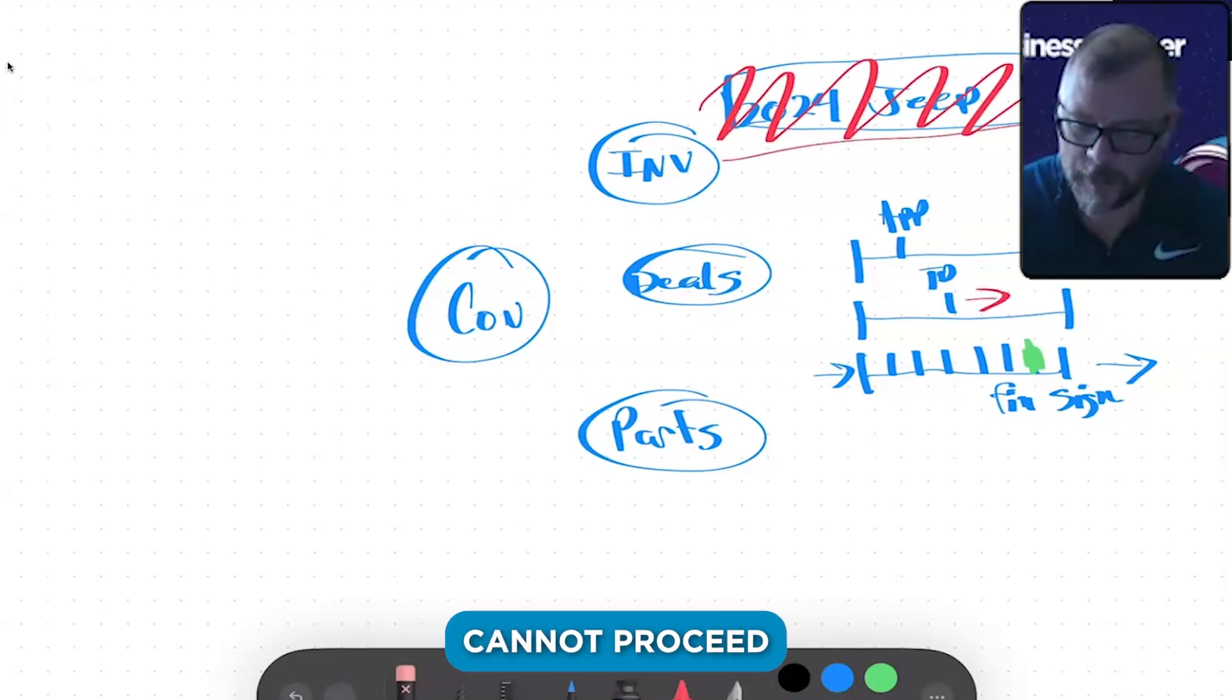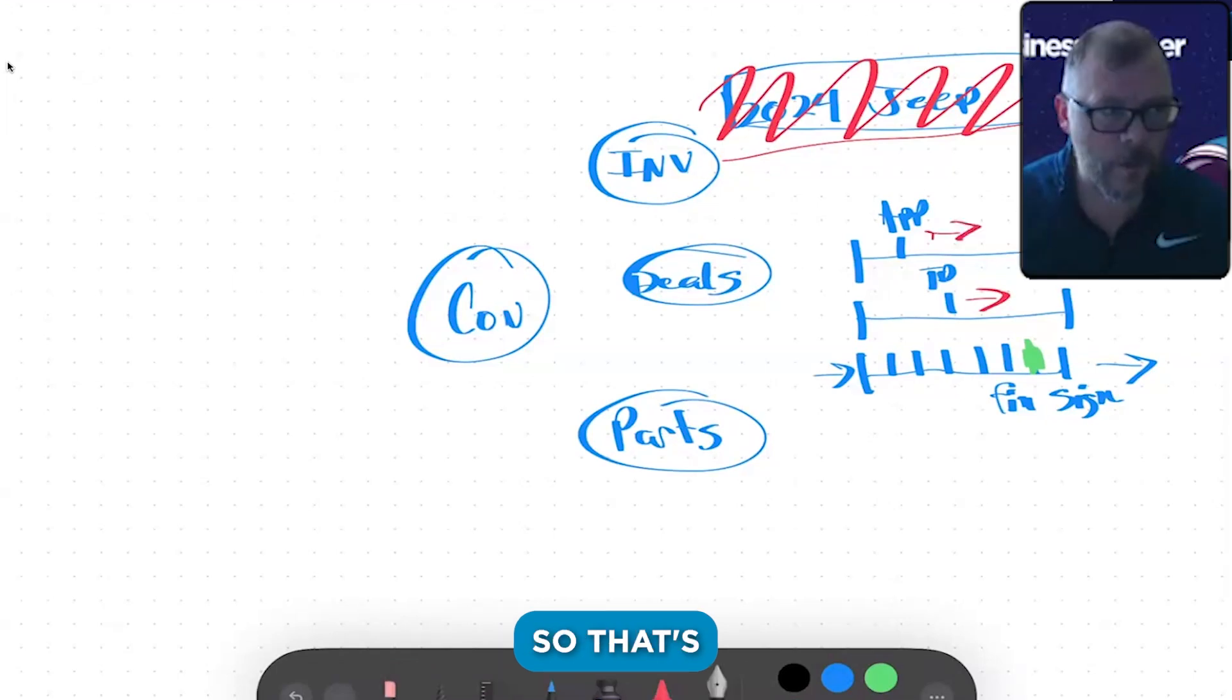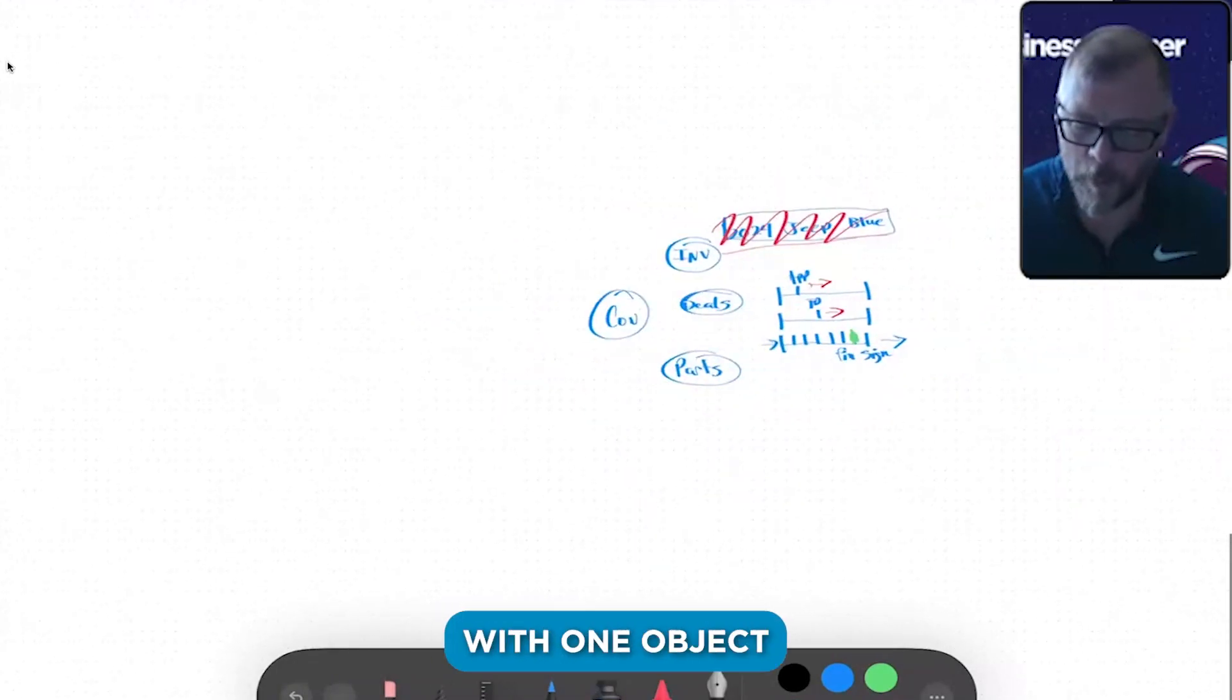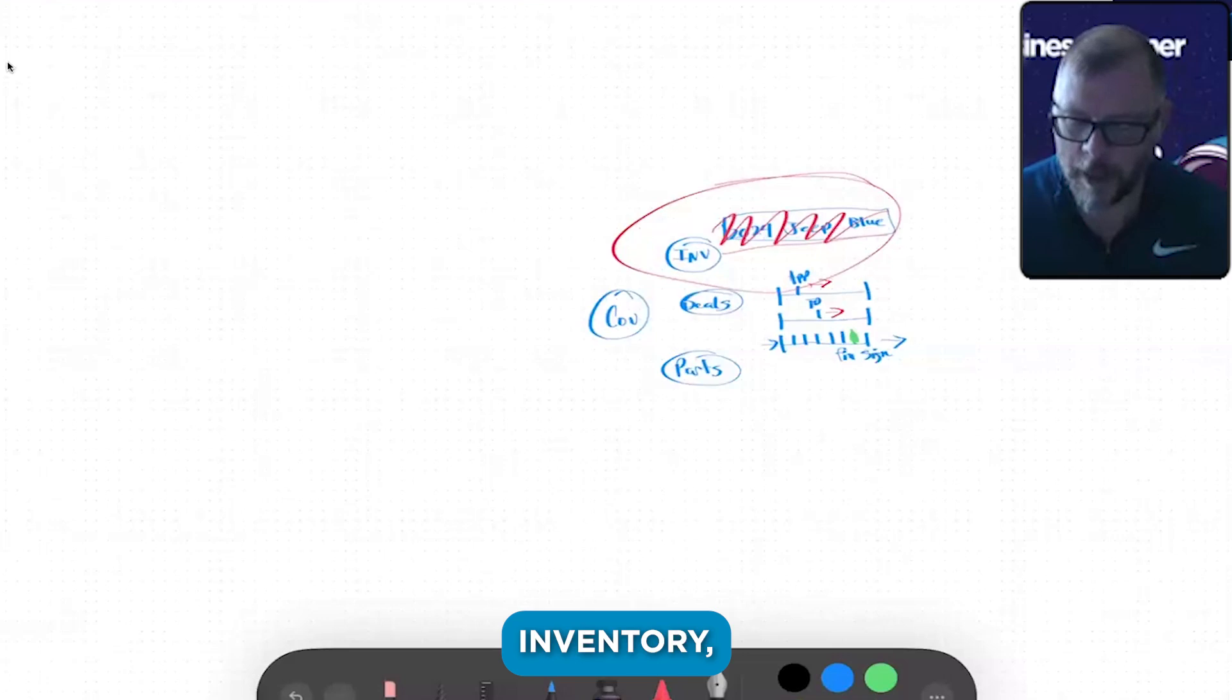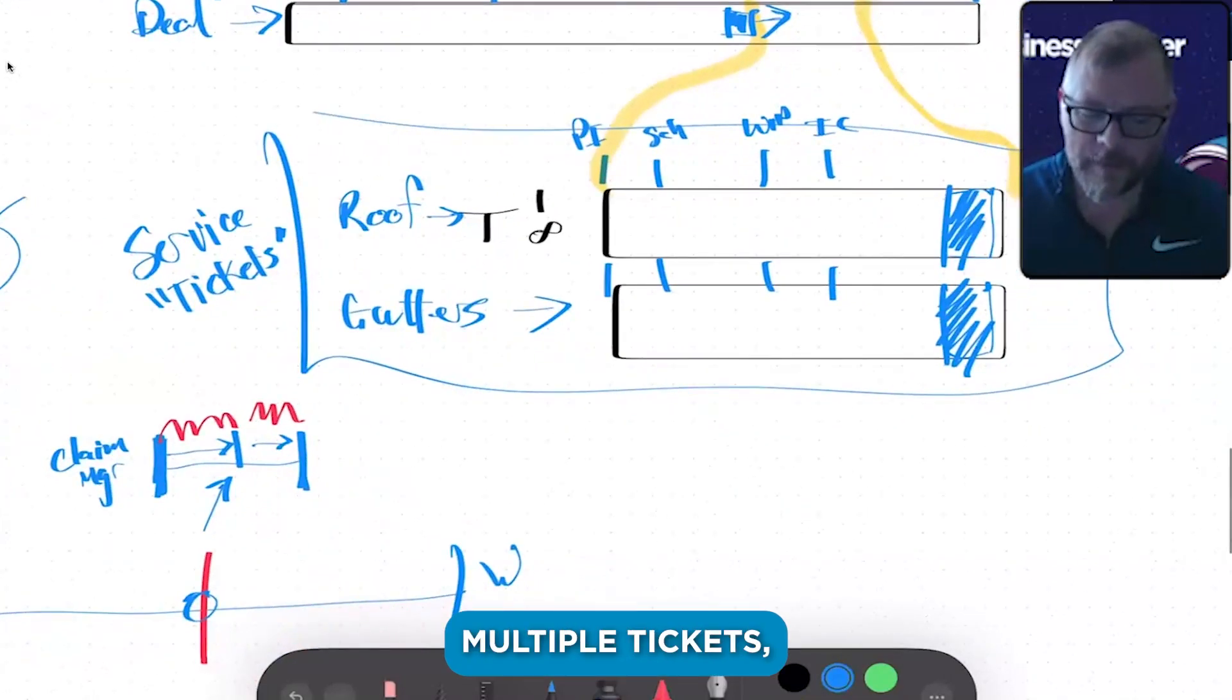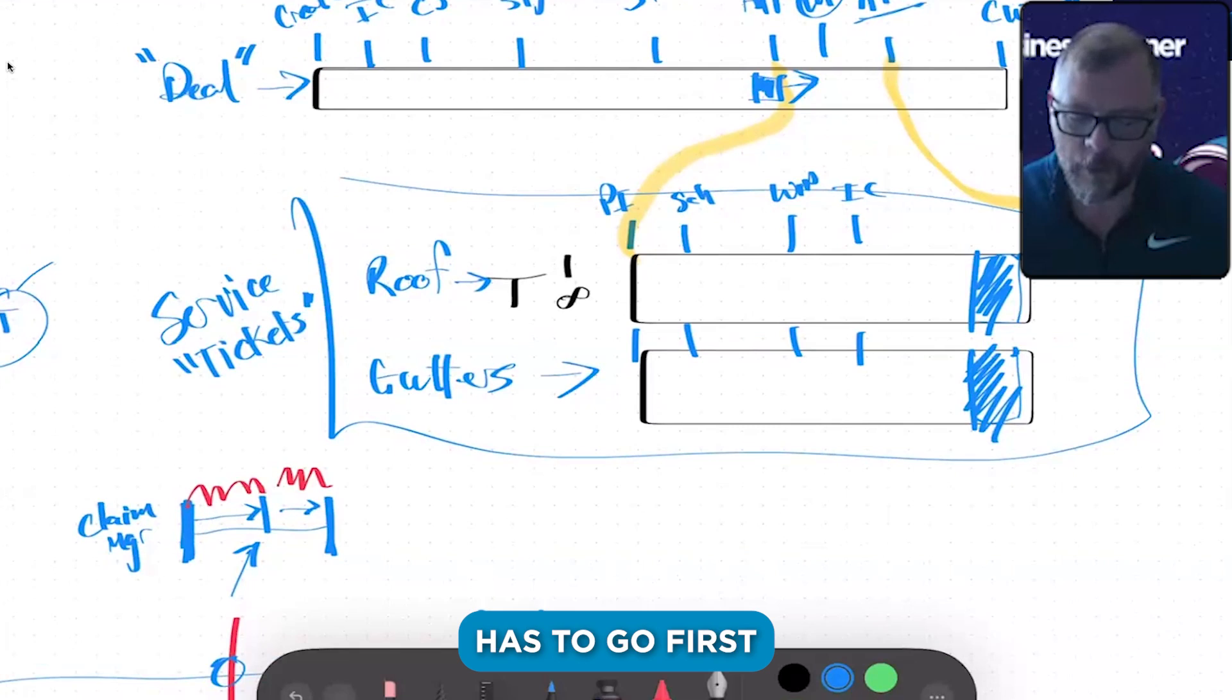So this deal—because this inventory piece no longer exists anymore—these deals cannot proceed any further. That's where we're trying to say based on what's happening with one object (inventory), we could have things that happen with deals.